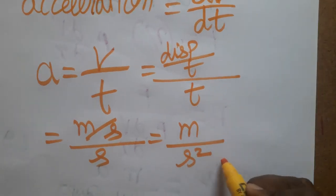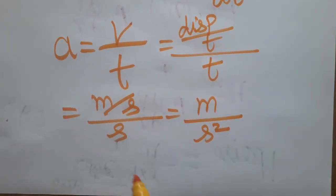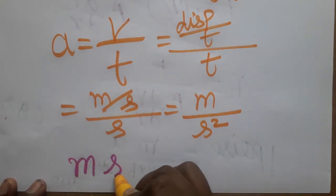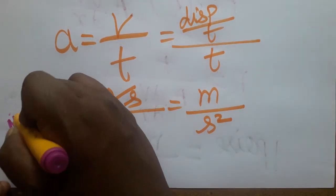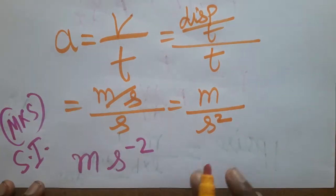From the denominator, I am taking the second to the numerator. We will get meter second minus two. This is the SI unit. SI unit follows the meter kilogram second MKS system. Meter second minus two is the SI unit of acceleration.